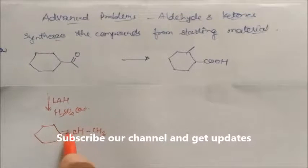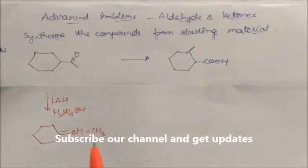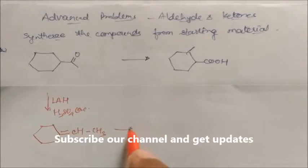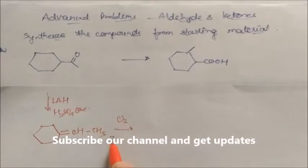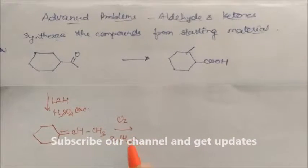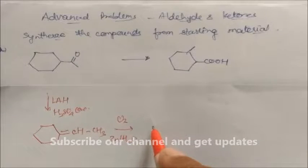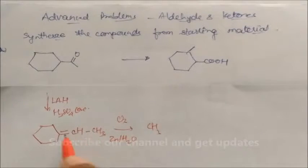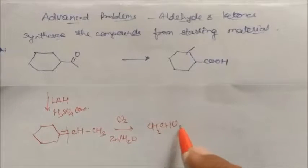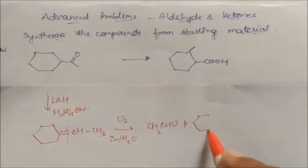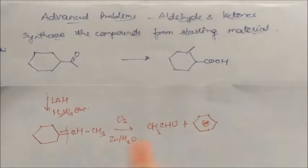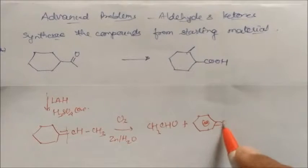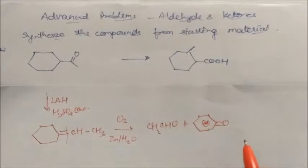It will give you a double bond like this. Then if you do ozonolysis with zinc plus H2O, this will convert into two products: CS3CHO and a second product which is a ketone. So splitting will take place to give CS3CHO and a ketone.